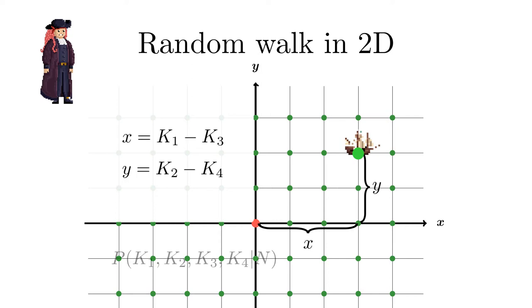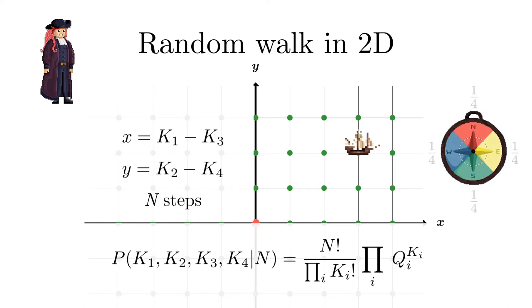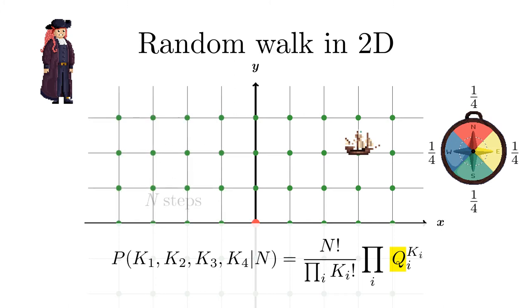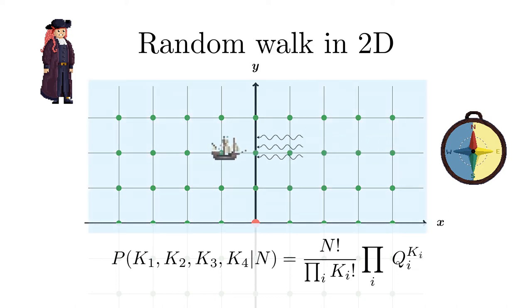The probability for such a set of direction frequencies after n steps is given by the multinomial distribution. The compass is perfectly symmetric so by the principle of indifference all four directions have the same probability of one-fourth. But here you can become creative and change the probabilities of the compass, maybe making them also dependent on the position of the ship to study for instance the effect of an ocean current or ocean streams.